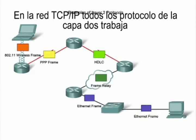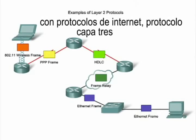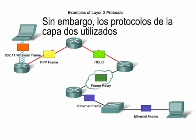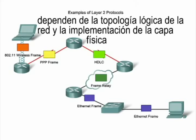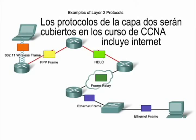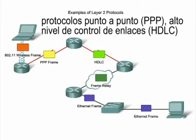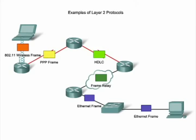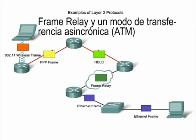In a TCP/IP network, all layer 2 protocols work with the internet protocol at layer 3. However, the actual layer 2 protocol used depends on the logical topology of the network and the implementation of the physical layer. Layer 2 protocols that will be covered in CCNA courses include Ethernet, Point-to-Point Protocol (PPP), High-Level Data Link Control (HDLC), Frame Relay, and Asynchronous Transfer Mode (ATM).